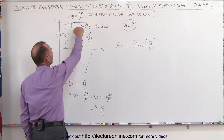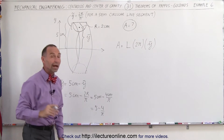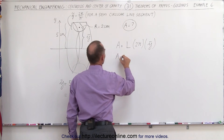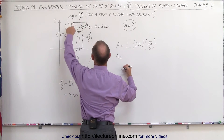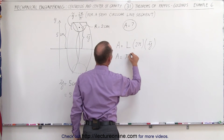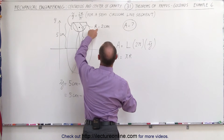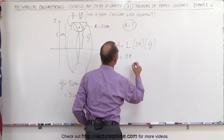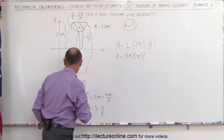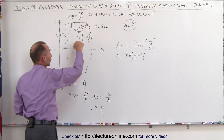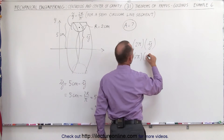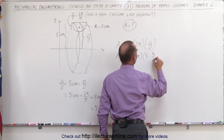That gives us the center of mass relative to the x-axis. We're now ready to plug into the equation. The surface area A is equal to the length of the semicircle — which is half of 2πr, so π times r — times 2π, times y, the y-coordinate of the center of mass, which equals 5 minus 4 over π.